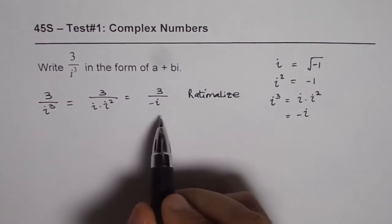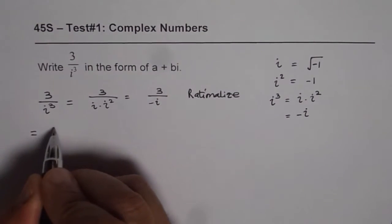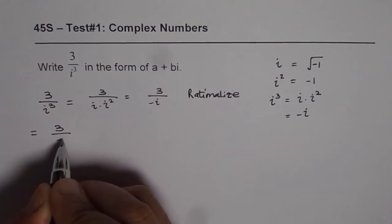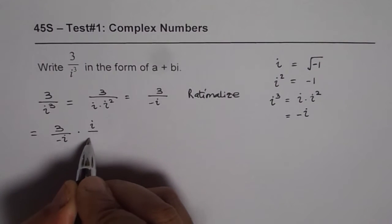Rationalize means multiply and divide by the conjugate. So conjugate for denominator minus i is plus i. So what we will do is rationalize by multiplying and dividing by the conjugate of minus i, which indeed is just i.